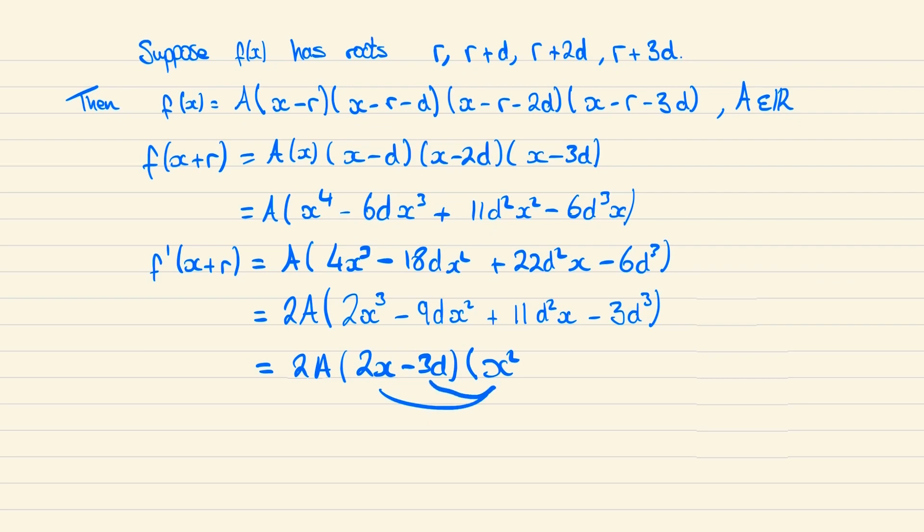And since we generate a minus 3d x squared we can minus 3d x to give us in total minus 9d x squared. And finally if we add in d squared at the end we get a minus 3d cubed and we also give ourselves the 11d squared x.